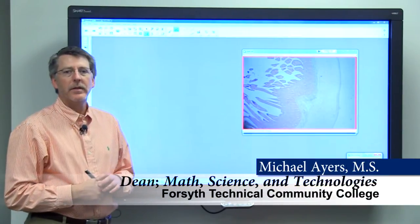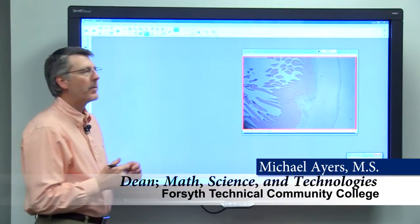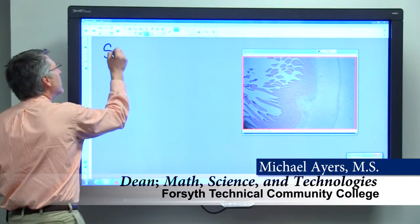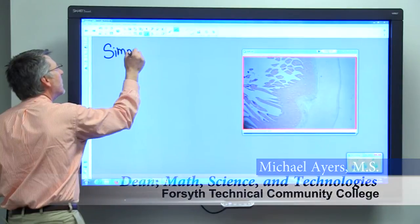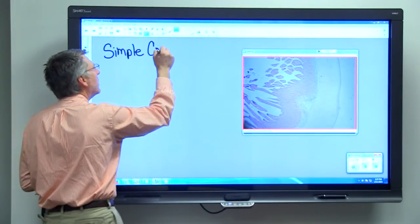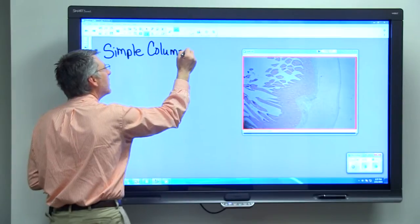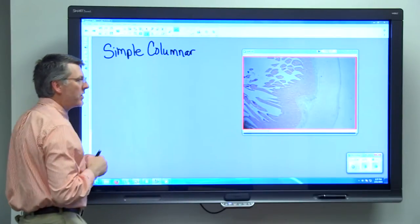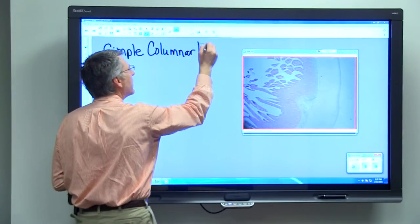So the next tissue we want to think about is called simple columnar epithelium - simple meaning one cell layer thick, columnar meaning column-shaped cells, epithelium.